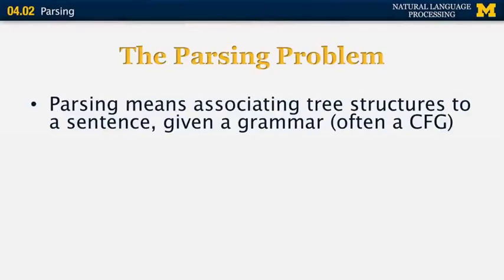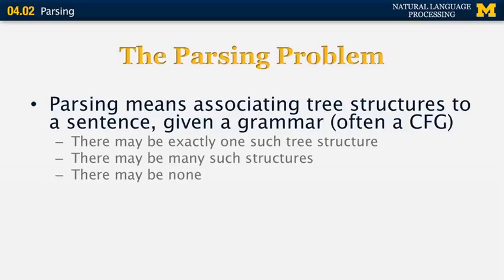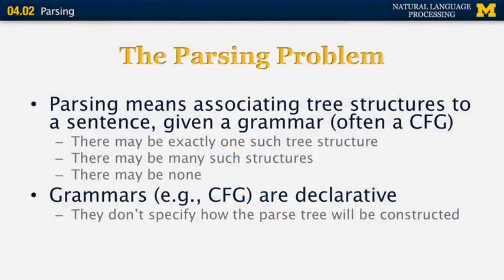So what is parsing? The parsing problem is essentially to associate some sort of structure, often a tree structure, with a sentence. This is done usually using a grammar, very often a context-free grammar. There may be exactly one such tree structure, or many, in which case you want to pick the most likely one, or none at all. One thing to keep in mind is that grammars are declarative — you cannot automatically come up with methods to convert a sentence into a parse tree; you have to augment the grammars using some code.